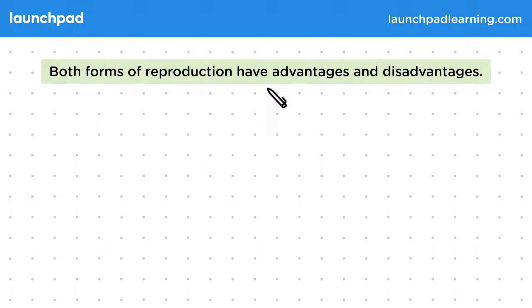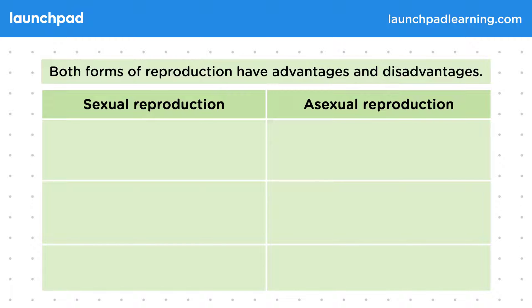Both forms of reproduction have advantages and disadvantages. For the exam you need to be able to explain the advantages and disadvantages of asexual and sexual reproduction for any organism if you're given the appropriate information. It's worth remembering that an advantage of one is typically a disadvantage of the other. So let's work through this table starting with sexual reproduction.